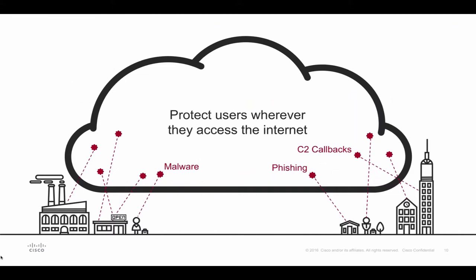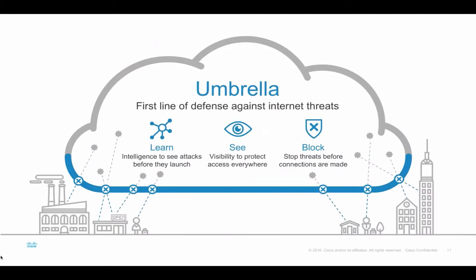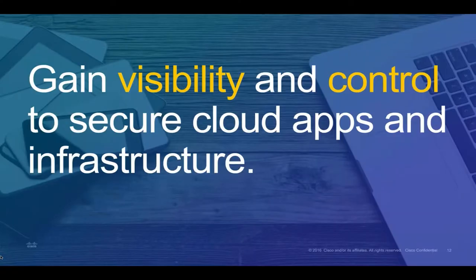Umbrella is really about helping you protect users wherever they access the internet — helping to defend against malware, phishing, and command-and-control callbacks, providing that first line of defense wherever users access the internet. And CloudLock is a very complementary product, because it's allowing you to gain visibility and control to really be able to secure your cloud apps and infrastructure.